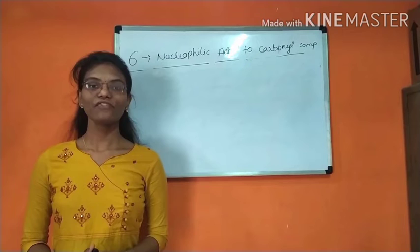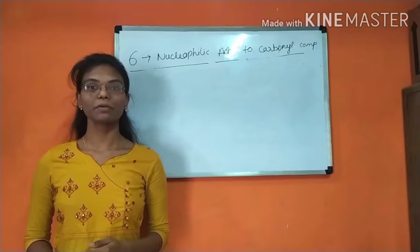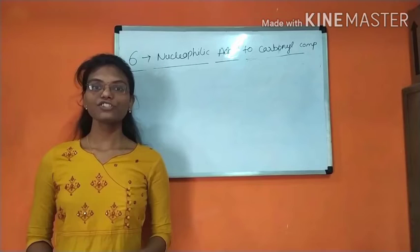Good evening everyone. Myself, Akshita. Welcome to Student Chem. Today we are going to start a new chapter from Organic Chemistry by Clarence. It's a very good book for understanding organic chemistry. It consists of total 43 chapters.